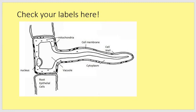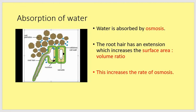Absorption of water occurs by osmosis — we've already had separate lessons about that. The root hair has an extension which increases the surface area to volume ratio. Because the ratio is increased, it has a larger surface area relative to the volume of the cell, which increases the rate of osmosis. The larger the surface area, the more water can pass across it by osmosis. Water goes through the cell membrane and then into the vacuole, which is why the vacuole extends all the way into the root hair cell.